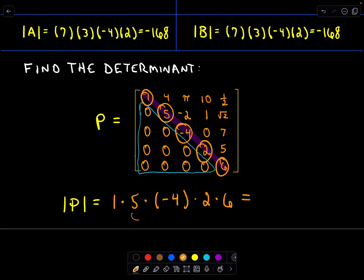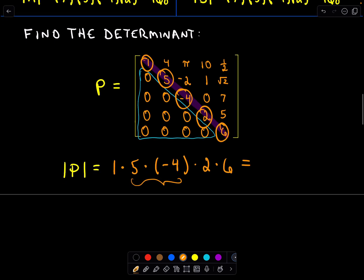So what are we going to get? 5 times negative 4 is negative 20, and 2 times 6 is 12. This looks like negative 240 if I've done my arithmetic correctly. And that's the determinant — that's all there is to it.